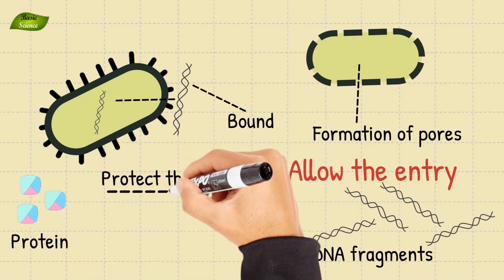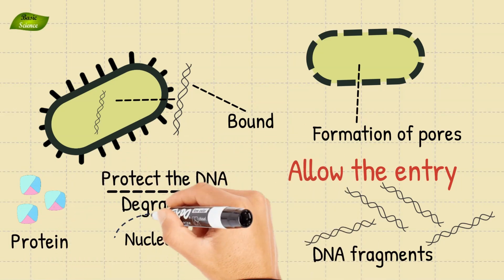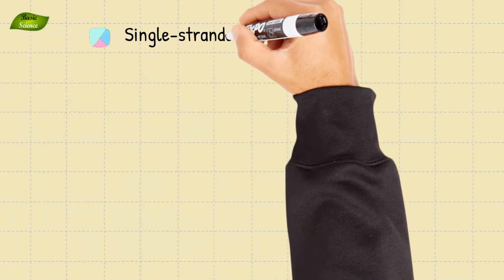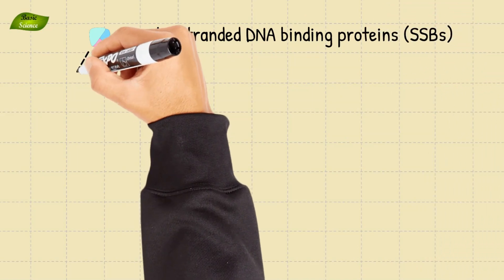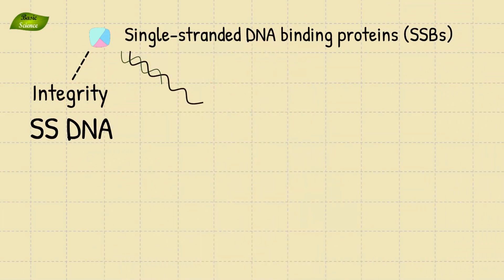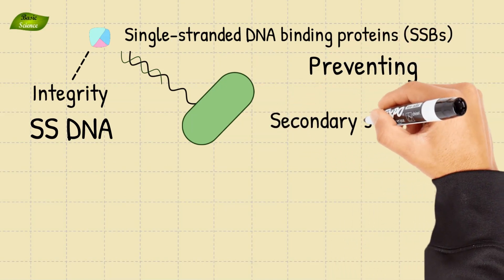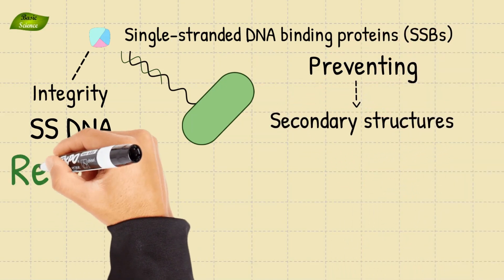Specialized proteins protect the incoming DNA from degradation by nucleases. Single-stranded DNA binding proteins or SSBs help maintain the integrity of incoming single-stranded DNA molecules, thereby preventing the formation of secondary structures.